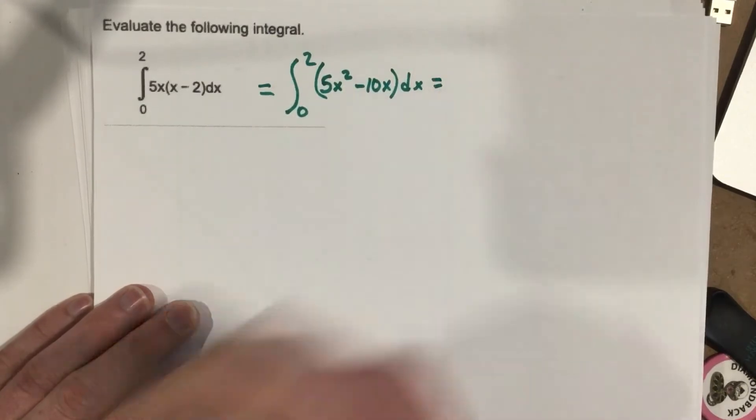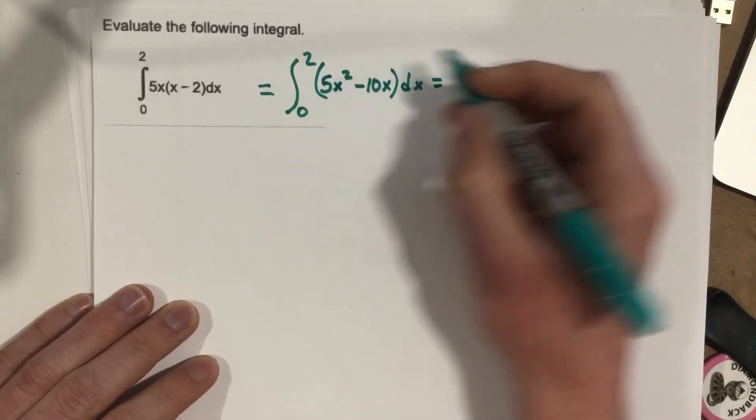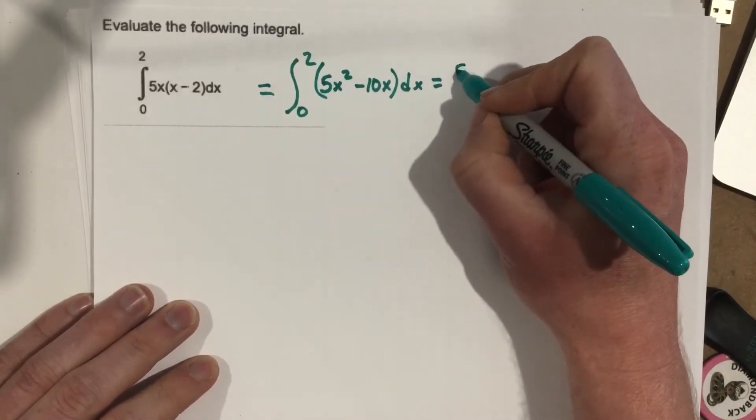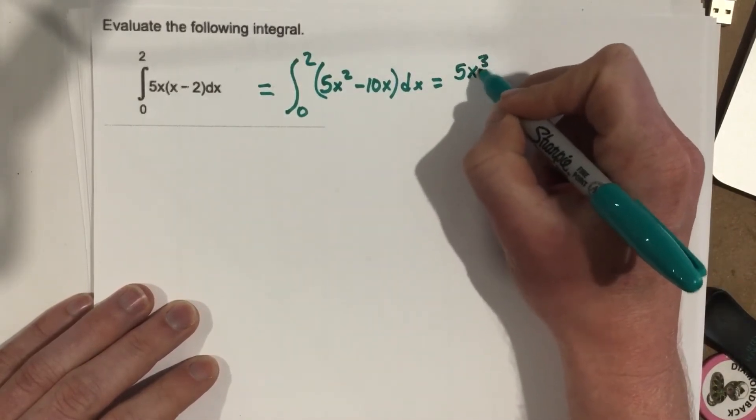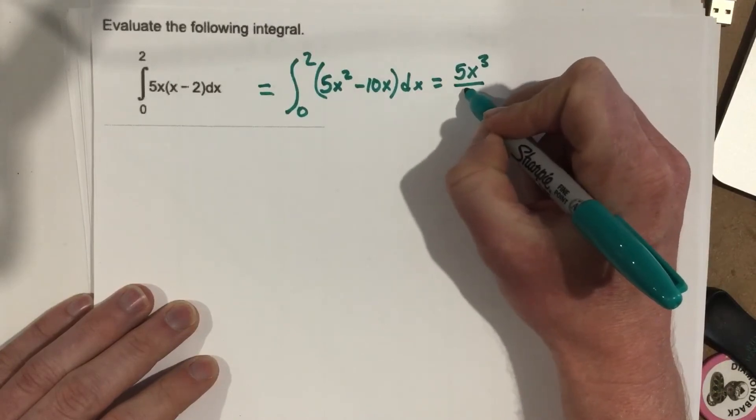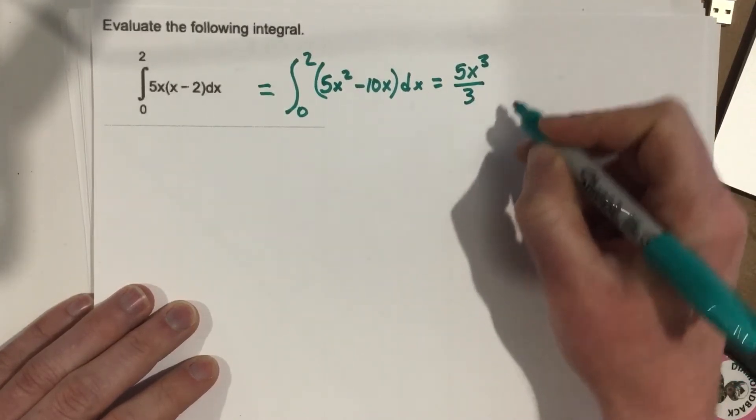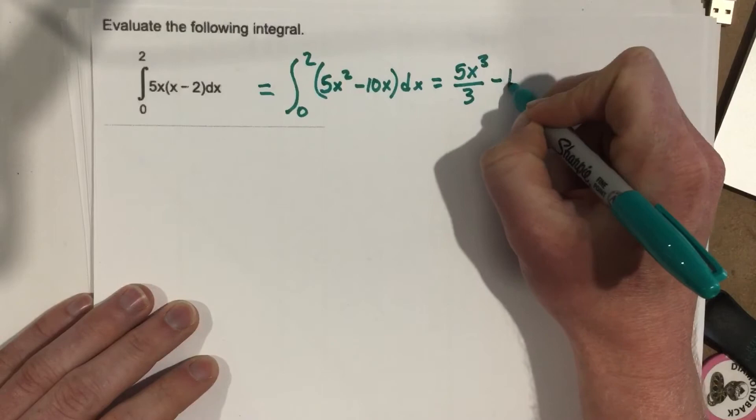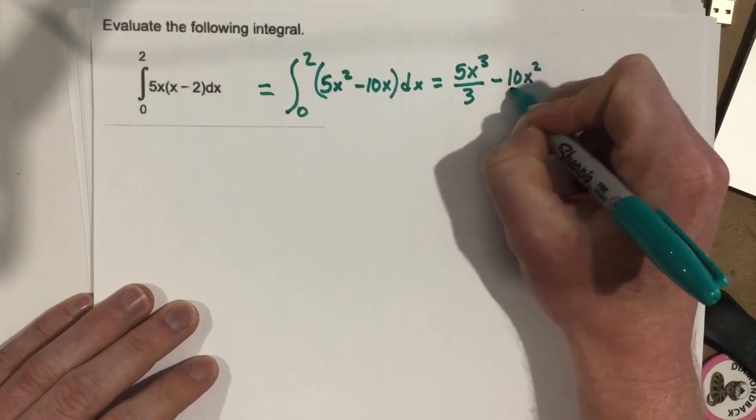Now I'm actually going to do the integration, the antiderivative. When I do the antiderivative of this, I end up with 5x cubed. Add 1 to the power, divided by 3, minus 10x squared divided by 2.